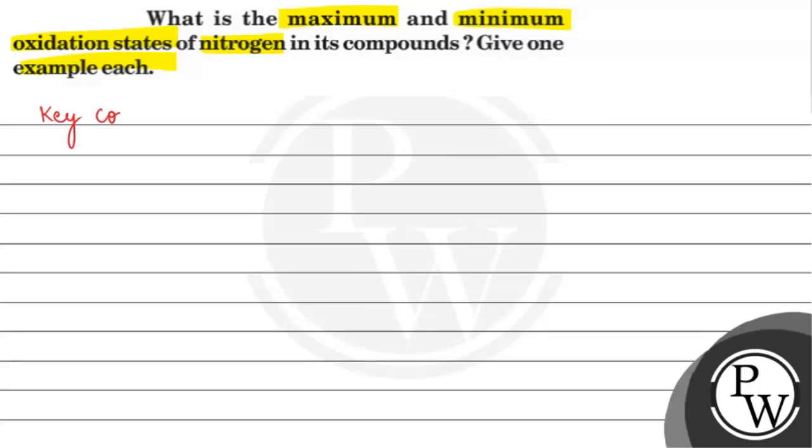So the key concept used in this question is the electronic configuration of nitrogen, which is 1s², 2s², 2p³.